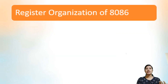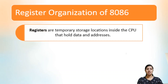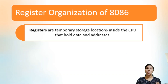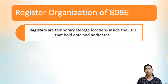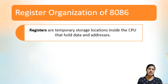Now let us look at the register organization of 8086. Registers are temporary storage locations inside the CPU, and they are used for holding data and addresses. For example, if we have to add two numbers — add a, b — the value of a should be stored inside one register and the value of b inside another register. So registers are temporary storage locations inside the CPU that can hold data as well as addresses.